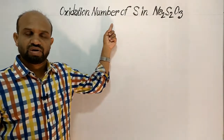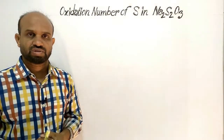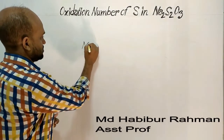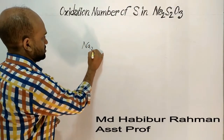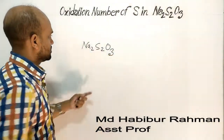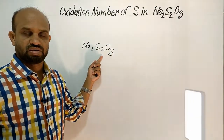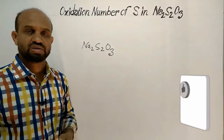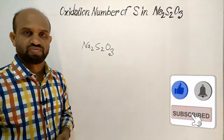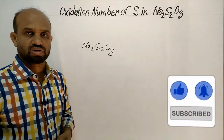Oxidation number of sulfur in sodium thiosulfate. This is sodium thiosulfate. First of all, let's see what is the oxidation number of sulfur according to the general rule.